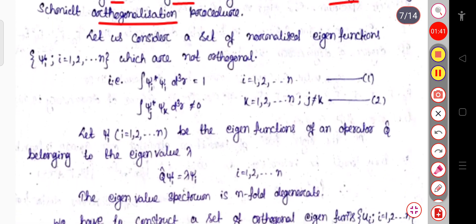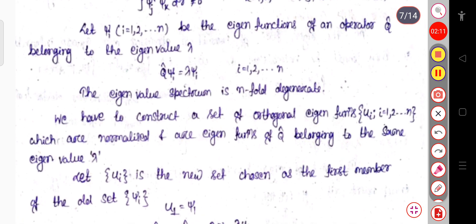Let us consider a set of normalized eigenfunctions ψᵢ for i = 1, 2, up to n, that are not orthogonal — that is, ∫ψᵢ*ψᵢ dq = 1, but ∫ψⱼ*ψₖ dq ≠ 0 for j ≠ k. These ψᵢ are eigenfunctions of operator Q̂ belonging to eigenvalue λ, so Q̂ψᵢ = λψᵢ for i = 1 to n. The eigenvalue spectrum is called n-fold degenerate.